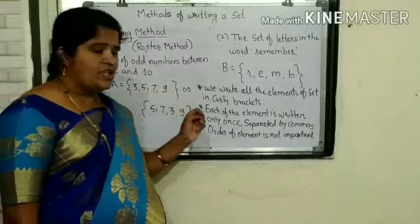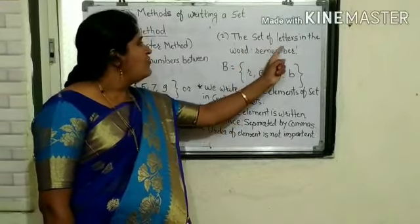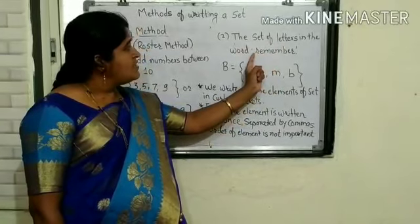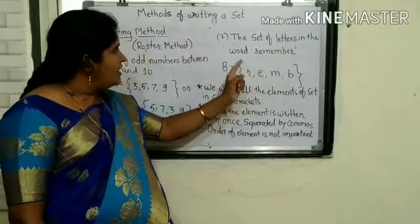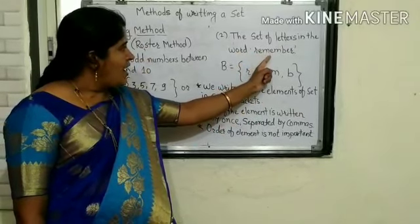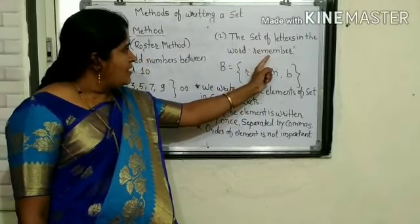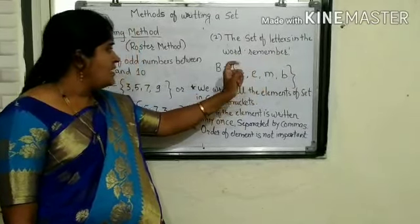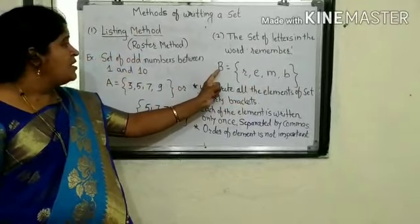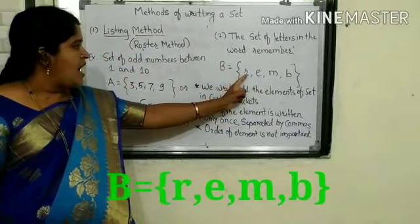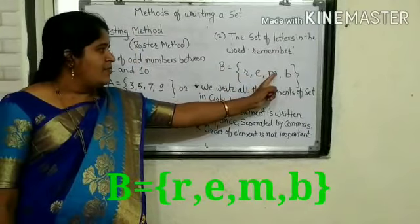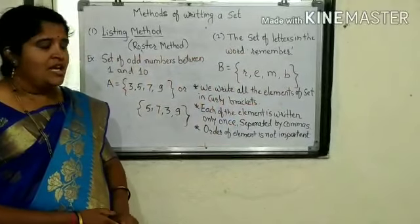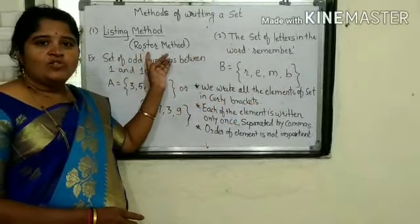Let us consider another example of this method: the set of letters in the word 'remember'. In the word 'remember', the letters are R, E, M — E is already kept, M is also already kept — so there is B. Therefore, the elements of this set B are: B = {R, E, M, B}. In this way, our first method is known as the listing method, also known as the roster method.